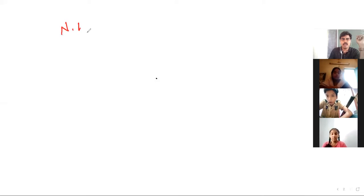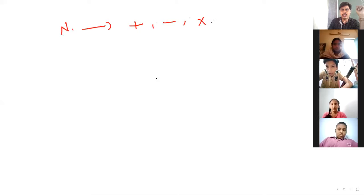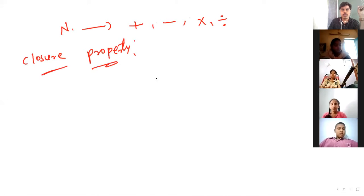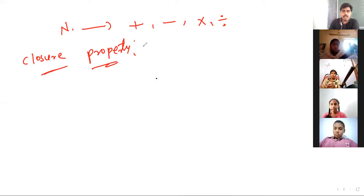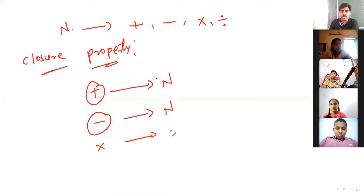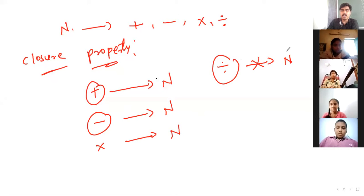Closure property we discussed in the last class. For natural numbers, in addition, in subtraction, in division, in multiplication, we discussed. What is closure property? Suppose if you take any two natural numbers and if you add them, you will get again a natural number. If you subtract them, you will get again a natural number. If you multiply them, you will get again a natural number. But in division, it would not happen — you will not get a natural number again.